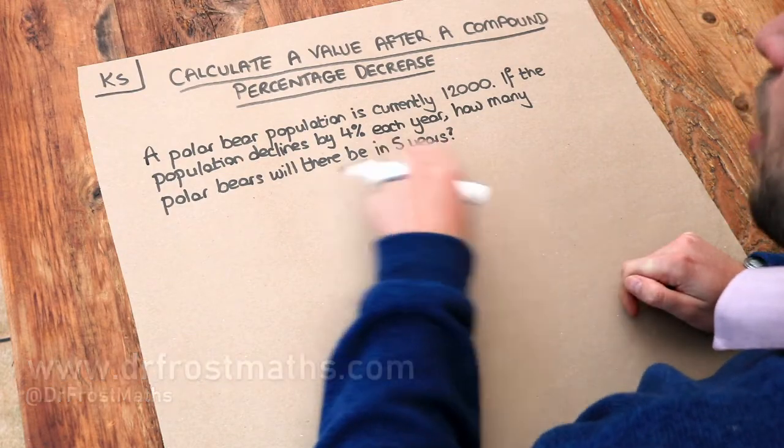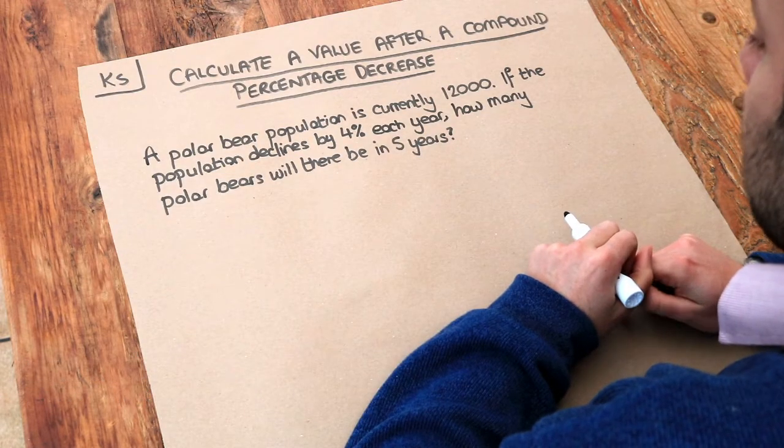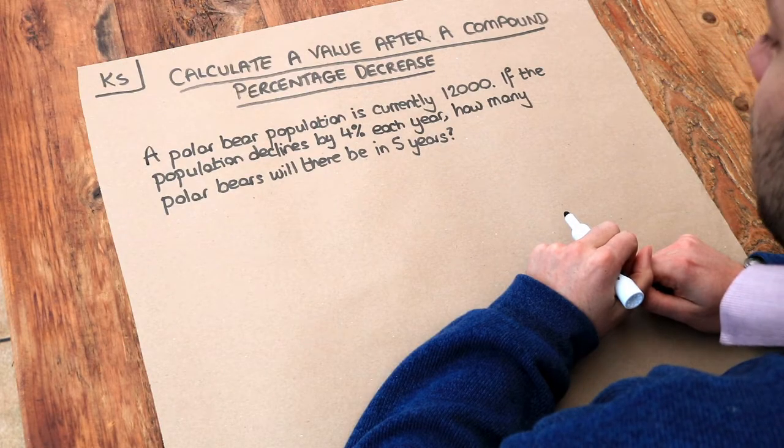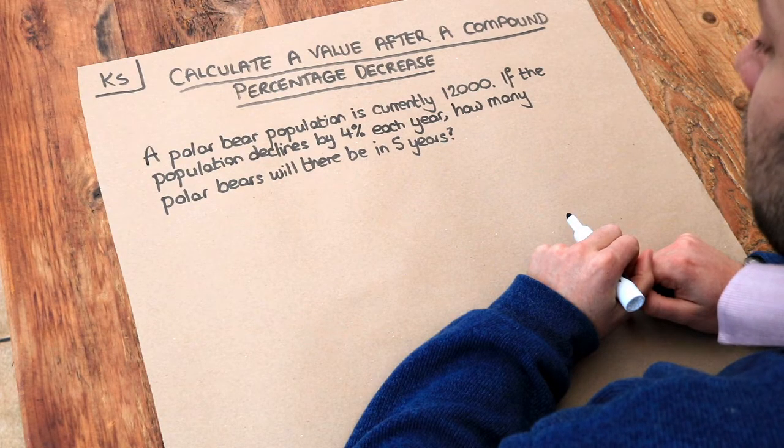We've got this problem here. A polar bear population is currently 12,000. If the population declines by 4% each year, how many polar bears will there be in 5 years?